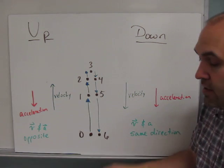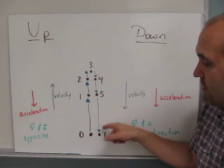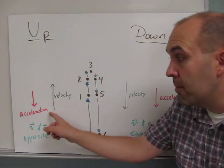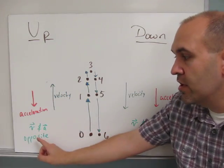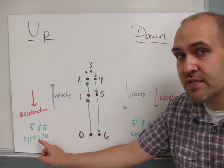That ball is farther apart in each successive second. So on the way up, the velocity is up and the acceleration is down. And remember that when the velocity and acceleration are opposite, we slow.